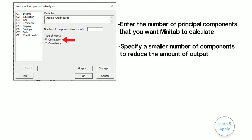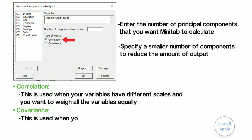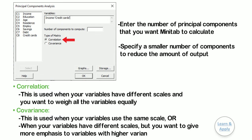Here, please select the correct type of matrix to use to calculate the principal components. Correlation is used when your variables have different scales and you want to weight all the variables equally — our example falls in this category. Covariance is used when your variables use the same scale, or when your variables have different scales but you want to give more emphasis to variables with higher variances.